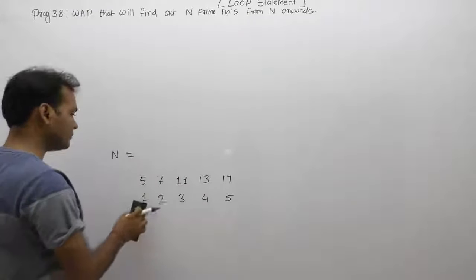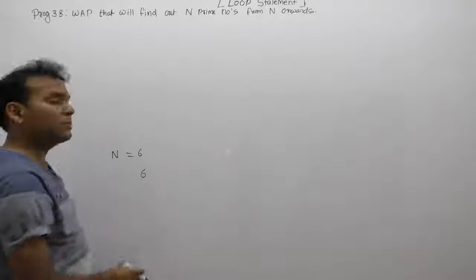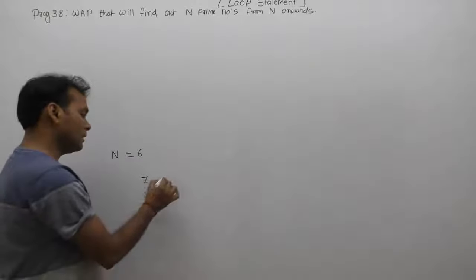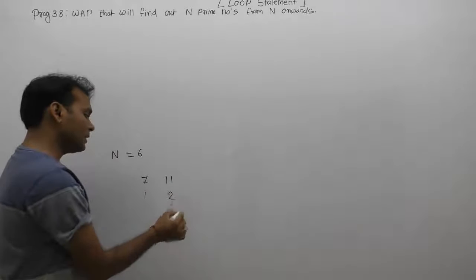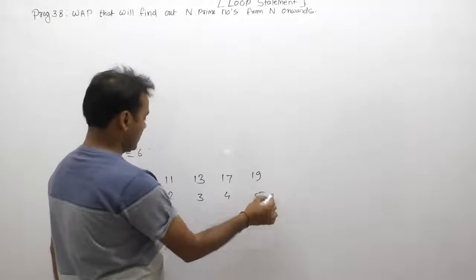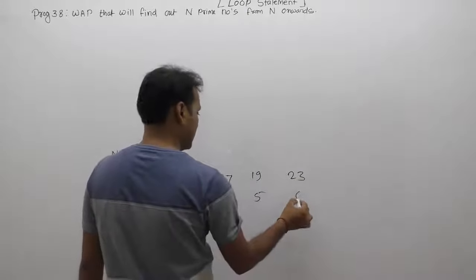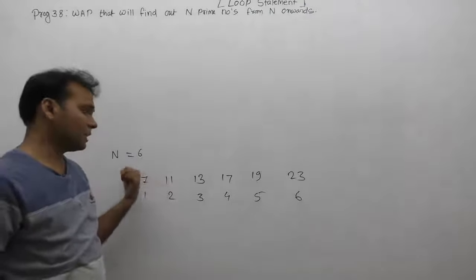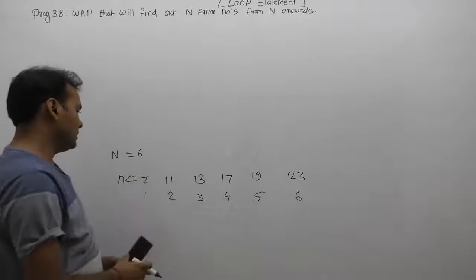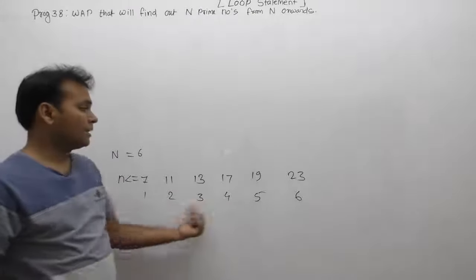Suppose the value of N is 6. Then prime number searching starts from 6 onwards. But 6 itself is not a prime number, so the first prime number found is 7. Then after 7, the next prime is 11 — the 2nd. After 11 is 13, the 3rd. After 13 is 17, the 4th. Then 19 is the 5th, and 23 is the 6th prime number. So we display N prime numbers in total, and all prime numbers must be greater than or equal to N.